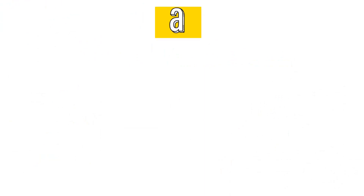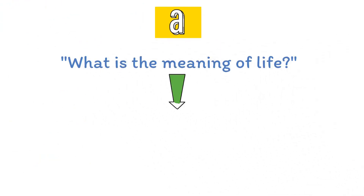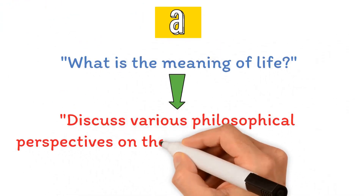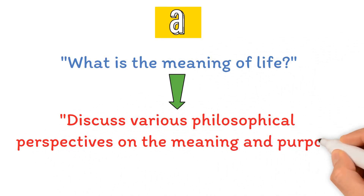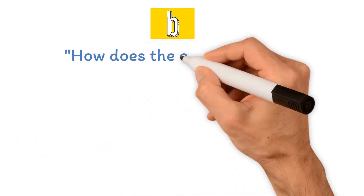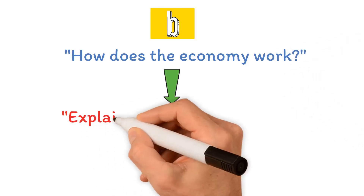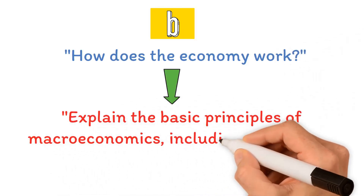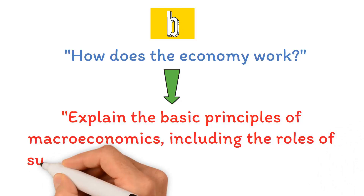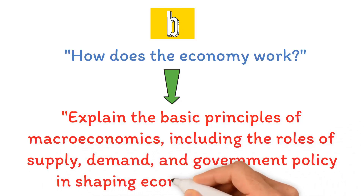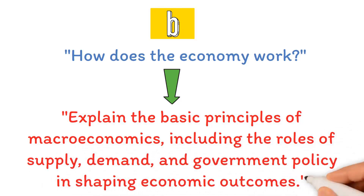A. 'What's the meaning of life?' becomes 'Discuss various philosophical perspectives on the meaning and purpose of human life.' B. 'How does the economy work?' becomes 'Explain the basic principles of macroeconomics, including the roles of supply, demand, and government policy in shaping economic outcomes.'